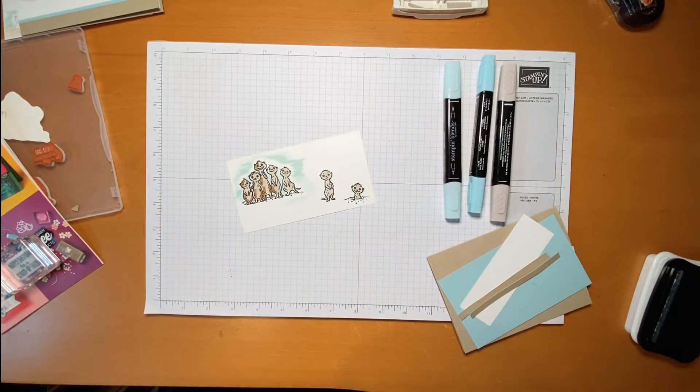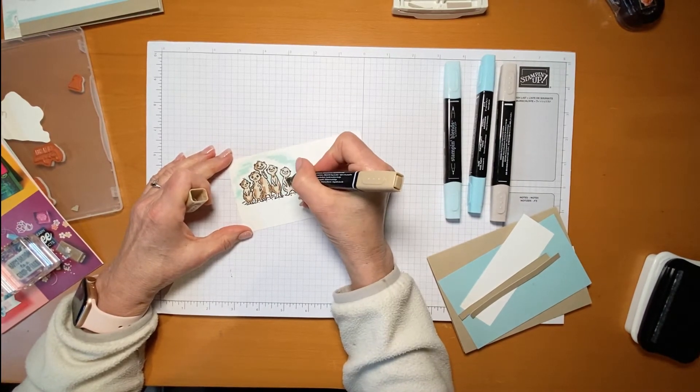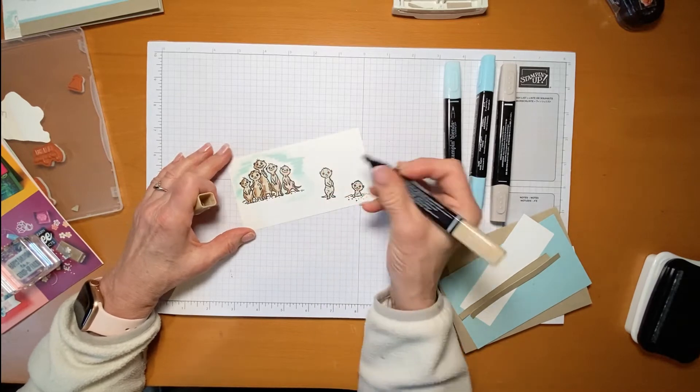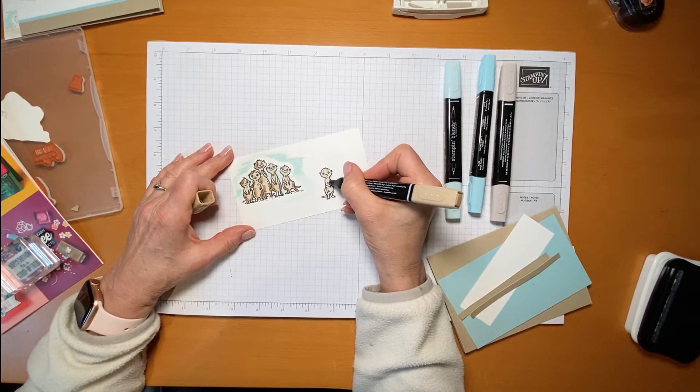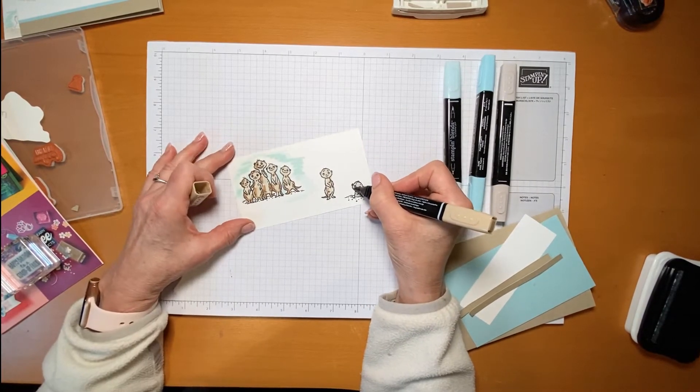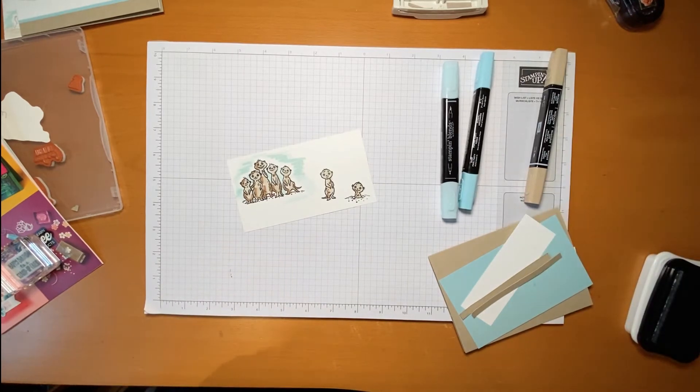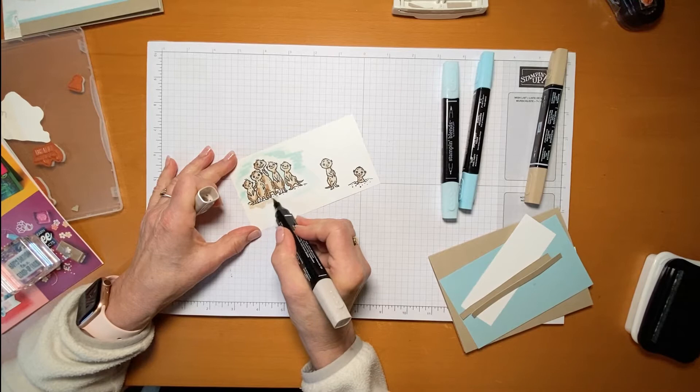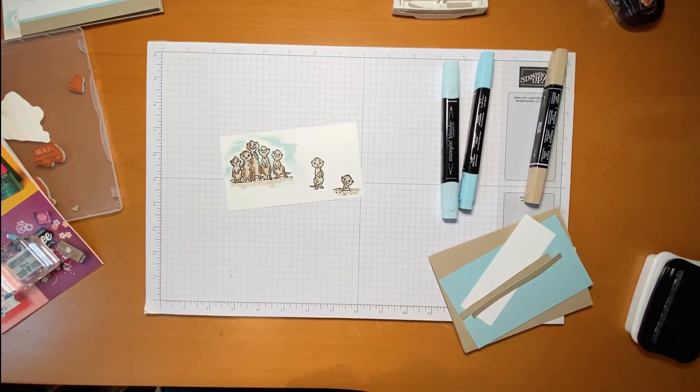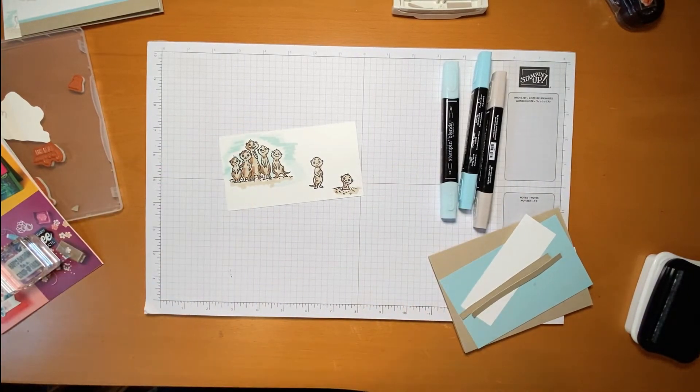So what I do to highlight is I usually follow the lines that are on the stamp. So you see here, there's a few little lines. And that's where I'll put a bit of the darker color. This little tail. And these guys, they have little lines here. So that gives me an indication of where I want to highlight a little darker color. And it doesn't have to be perfect just as long. Let's give them some sand here to stand on. So we're done with that part.